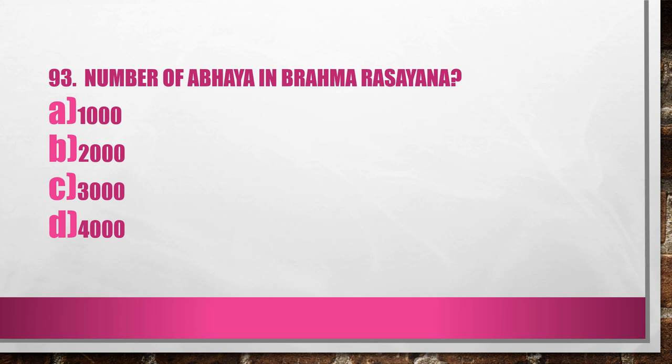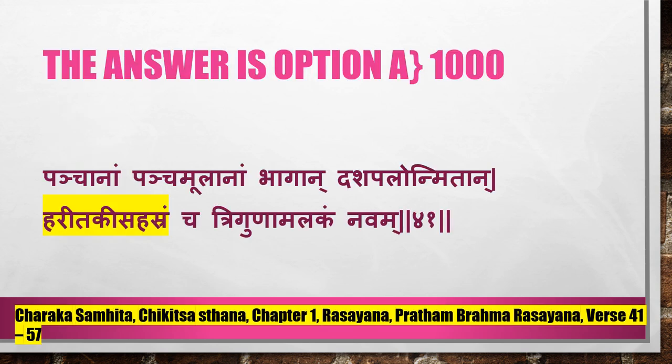Question 93. Number of Abhaya in Brahma Rasayana: A. 1000, B. 2000, C. 3000, D. 4000. Answer is Option A, 1000. From the verse: Haritagi Sahasramcha, Trikuna Amalakam Navam — so Haritagi or Abhaya is 1000 in number. This is a big yoga. Reference: Charaka Samhita Chigilsastana Chapter 1, Rasayana, Pradham Brahma Rasayana, Verse 41 to 57.